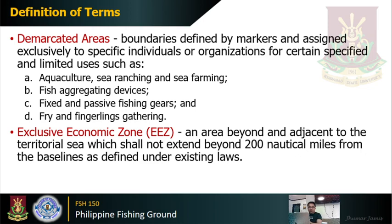As mentioned, demarcated areas are exclusively assigned to specific individuals, limited to uses for aquaculture, fish aggregating devices, the operation of fixed and passive fishing gears, and sometimes exclusively for fry and fingerlings gathering, especially for aquaculture, stock enhancement, sea ranching, and so on. That is the definition of demarcated areas.